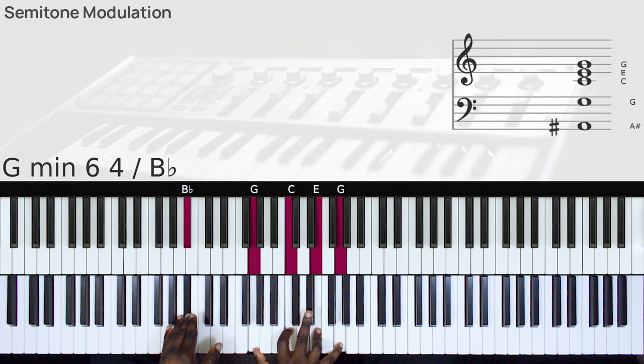And then the next thing to do is to go to a chord 5 in the next key. In this case, this would be C-sharp.